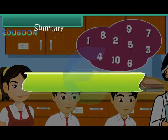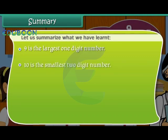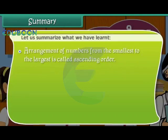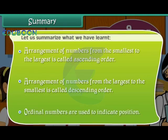Summary. Nine is the largest one-digit number. Ten is the smallest two-digit number. Ninety-nine is the largest two-digit number. One hundred is the smallest three-digit number. Nine-hundred and ninety-nine is the largest three-digit number. Arrangement of numbers from the smallest to the largest is called ascending order. Arrangement of numbers from the largest to the smallest is called descending order. Ordinal numbers are used to indicate position.